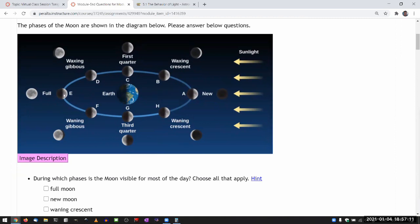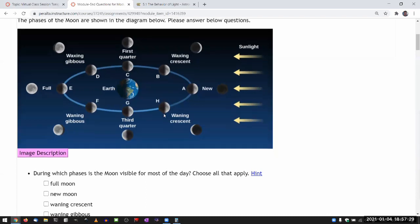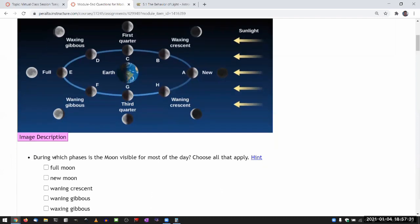So the full moon rises as the sun sets and it also sets as the sun rises. So full moon covers the night, it does do that. But if you look at something like a crescent moon, then it's mostly rising and setting very close to the sun. So that's what this question is getting at: during which phases is the moon visible for most of the day? So day, not night.